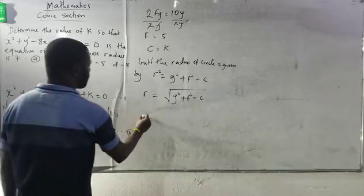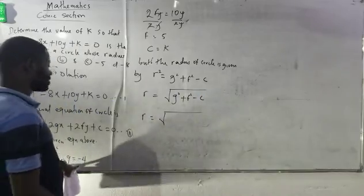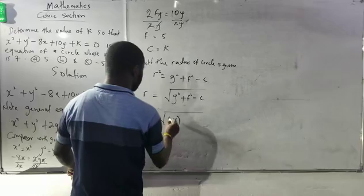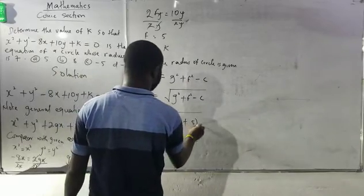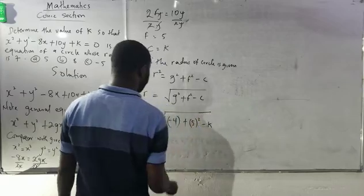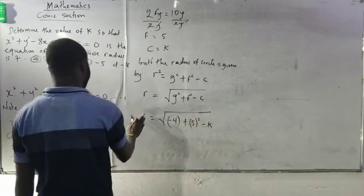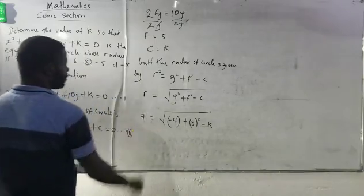It means I will be having 7 equals to the square root of g² + f² - c. What is my g? My g is -4. My f is 5. My c is k. R is given from the question, which will be 7.